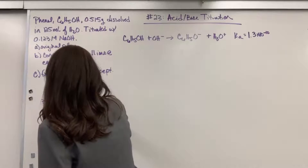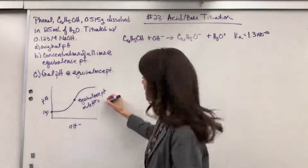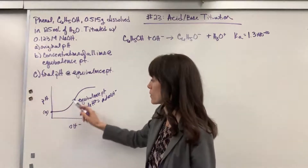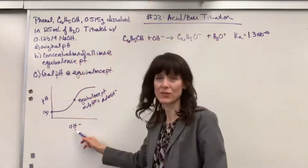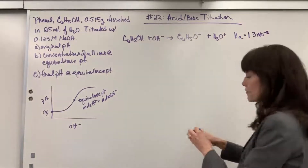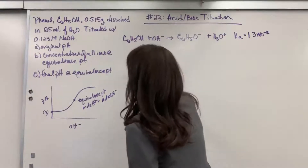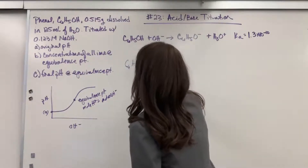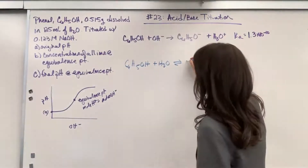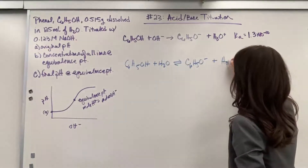What we're looking for is also the pH at the equivalence point, where the moles of the acid equal the moles of the base. So these are the two points we're focusing on. For the initial, remember I haven't added any hydroxide — I only have the phenol floating in water. We're going to have phenol that partially reacts with water because it is a weak acid. It goes into equilibrium — our phenol conjugate base loses that hydrogen plus the hydronium.